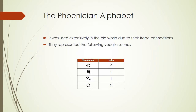The Phoenician alphabet was used extensively in the old world due to their trade connections. It's interesting to note that the Phoenician alphabet represented the following vocalic sounds: A, E, I, and O. Most of the old cultures — including the Hebrews, the Phoenicians, the Greeks, and the Latins — represented these symbols, and later the U was added. So we have A, E, I, O, U.